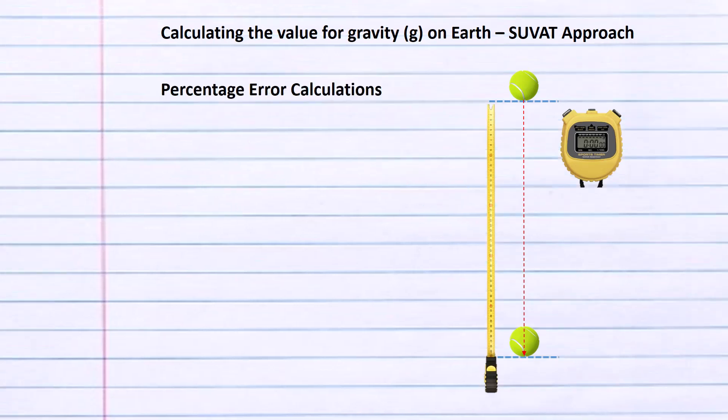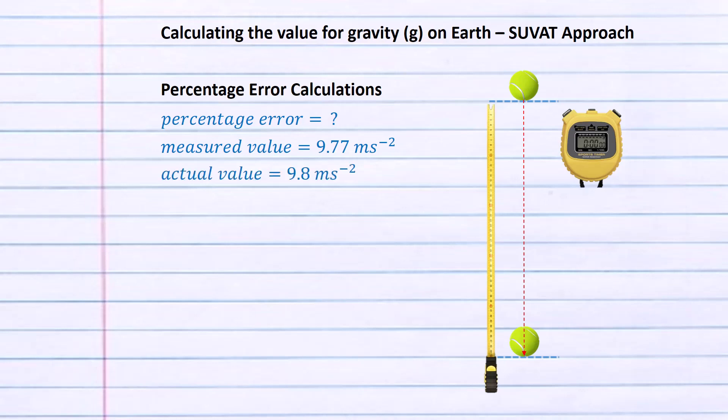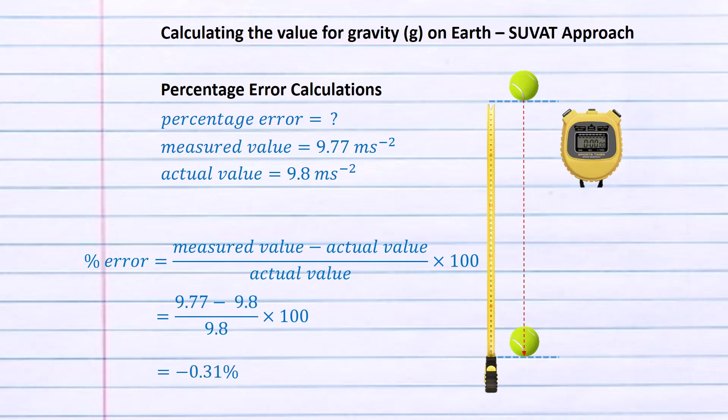Let's now look at the percentage error calculation. We know the measured value that we just calculated to be 9.77 meters per second squared. The actual value of gravity on planet Earth is 9.8 meters per second squared. To work out the percentage error we take the measured value minus the actual value, divide by the actual value, and multiply by 100. This gives us a percentage error of minus 0.31 percent. Negative just means our measured value is less than the actual value.